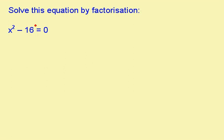I can see here a difference of two squares. This is x squared and this is 4 squared. So I've got x minus 4, x plus 4 when I factorise it. This is equal to 0.